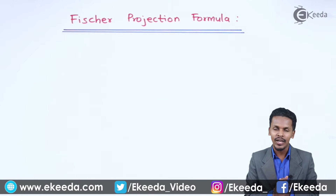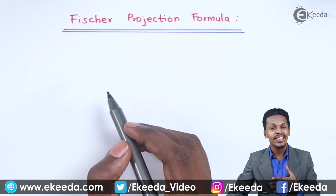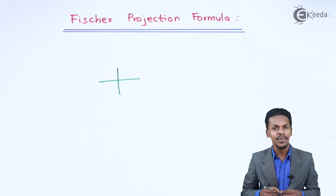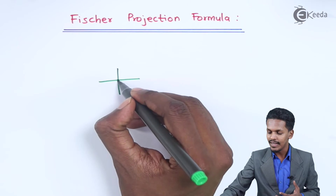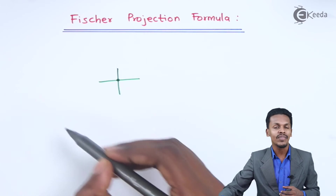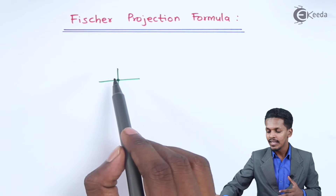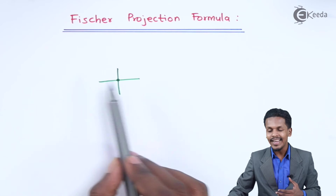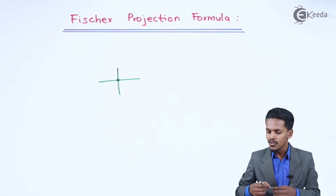In Fischer Projection, the tetrahedral carbon is represented with cross lines — one vertical and one horizontal. This intersection represents the chiral carbon atom. The vertical line expresses the longest chain of the carbon atom, while the horizontal line represents the other valencies or groups associated with this carbon atom.